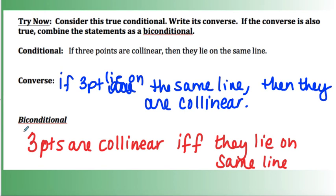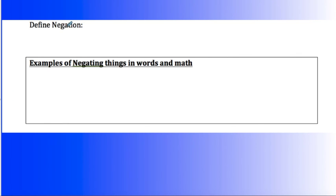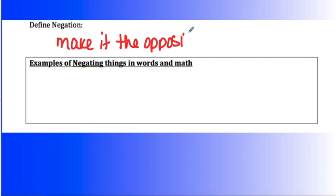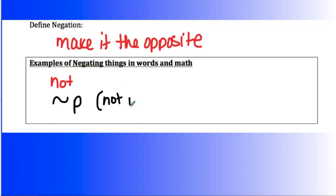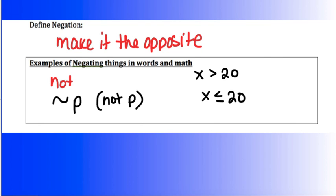The way we write a statement in geometry can change its meaning, and we'd love to write a bi-conditional whenever we can. Now, negation: negating something in math means making it the opposite — making it untrue. We can use the word 'not,' or in symbolic notation, a negation symbol in front of p means 'not p.' For example, if X is greater than 20, negating that gives X is less than or equal to 20. If p equals 5, negating that gives p does not equal 5.